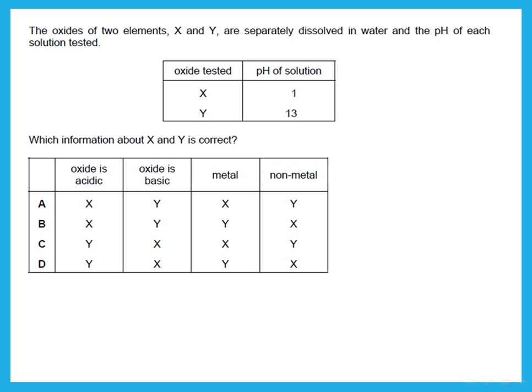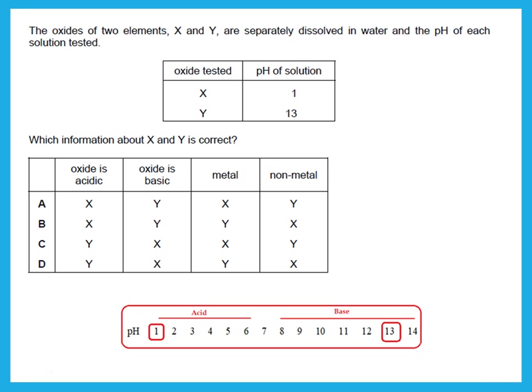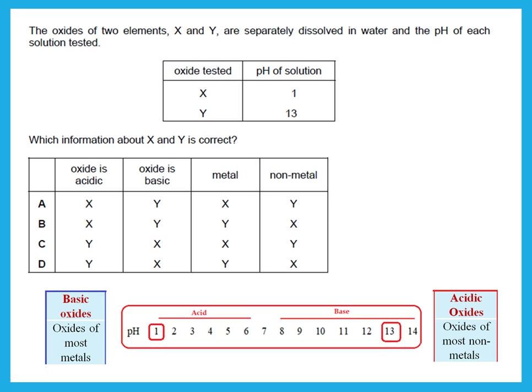Oxides of two elements X and Y are separately dissolved in water and the pH of each solution is tested. One is pH 1 and the other is pH 13. So X is acidic and Y is basic. If X forms an acidic oxide, is it a metal or non-metal? That means X is a non-metal, since acidic oxides are formed by non-metals, while basic oxides are formed by metals. So the answer is B.